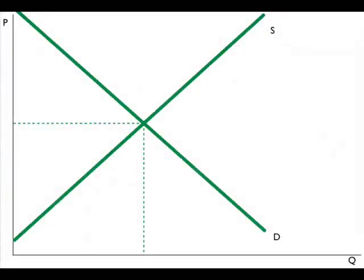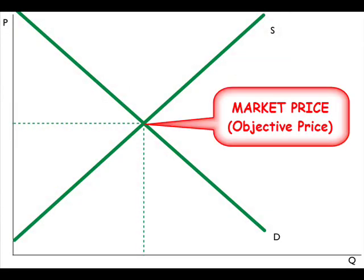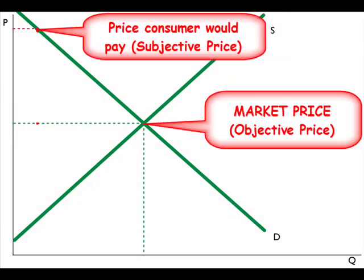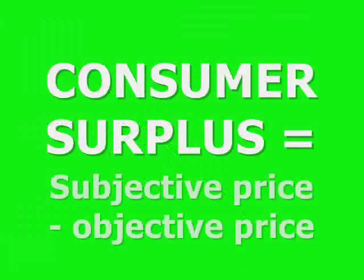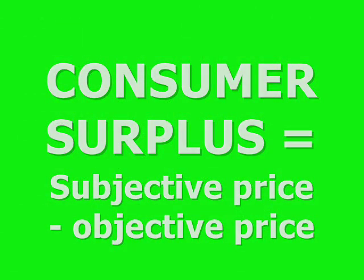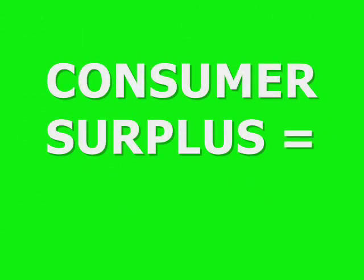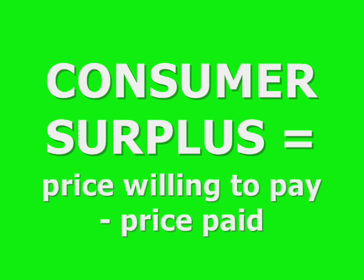If the market price, the objective price, is less than what the consumer is willing to pay, then he or she has consumer surplus, where consumer surplus is defined as the subjective price minus the objective price—that is, the difference between what the consumer would have been willing to pay and the market price that he or she did pay.